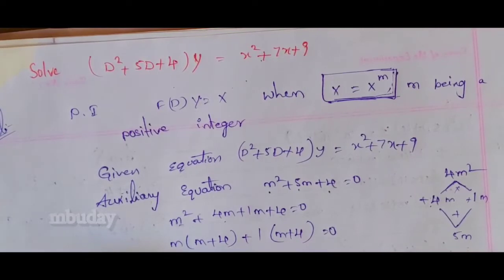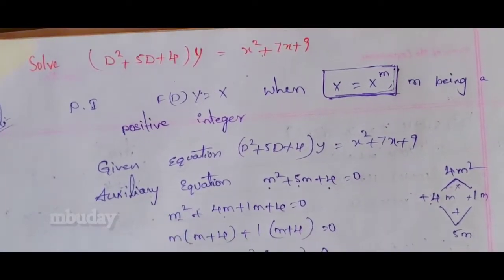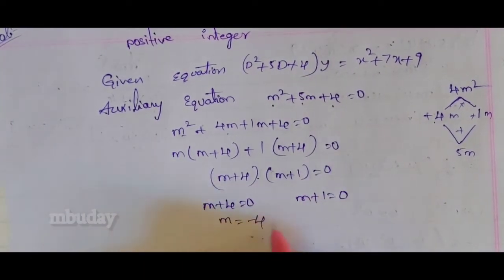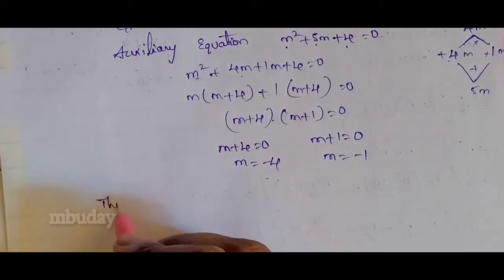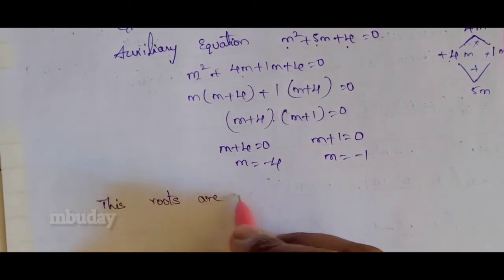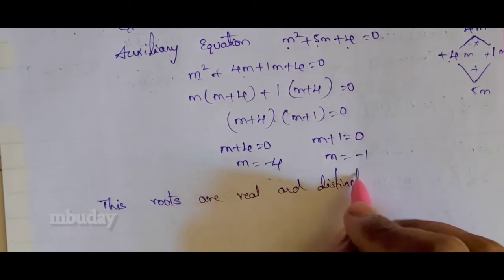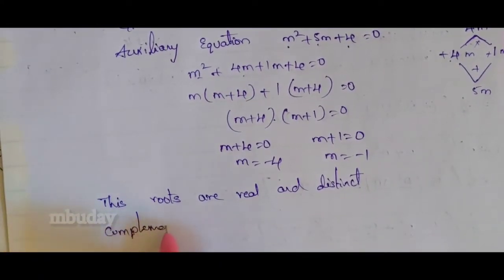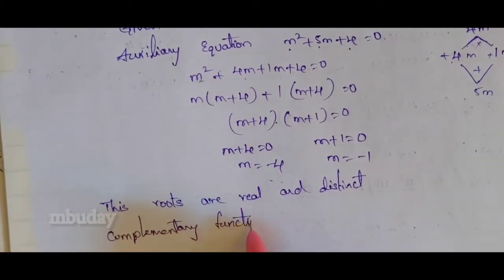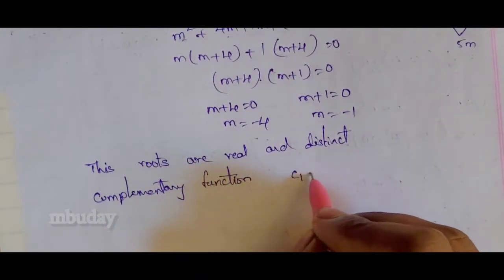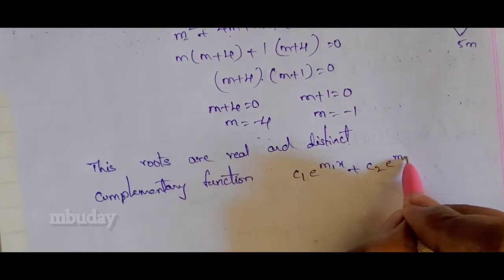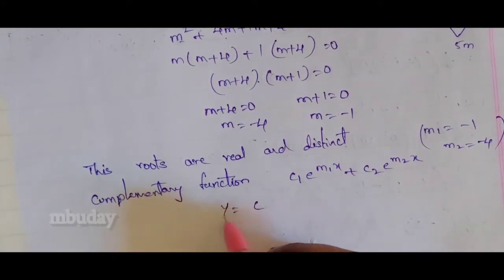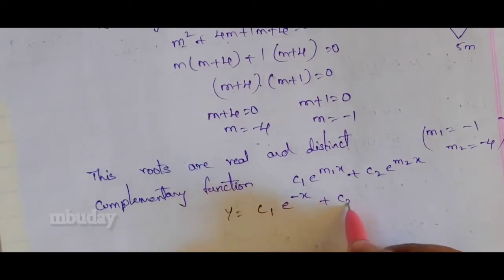The factored form is M plus 4 into M plus 1 equals 0. So M plus 4 equals 0 and M plus 1 equals 0, giving M equals minus 4 and M equals minus 1. These roots are real and distinct. The complementary function is C1 e to the power minus x plus C2 e to the power minus 4x.